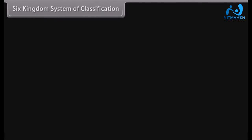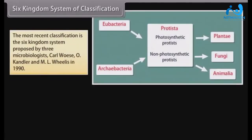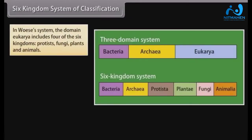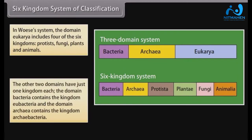The Six Kingdom System of Classification: The most recent classification is the Six Kingdom System proposed by three microbiologists — Carl Woese, O. Kandler, and Emil Willis in 1990. They proposed that all organisms be divided into three major groups called domains above kingdom level: Eukarya, Bacteria, and Archaea. The domain Eukarya includes four of the six kingdoms: Protists, Fungi, Plants, and Animals. The domain Bacteria contains the kingdom Eubacteria, and the domain Archaea contains the kingdom Archaeabacteria.